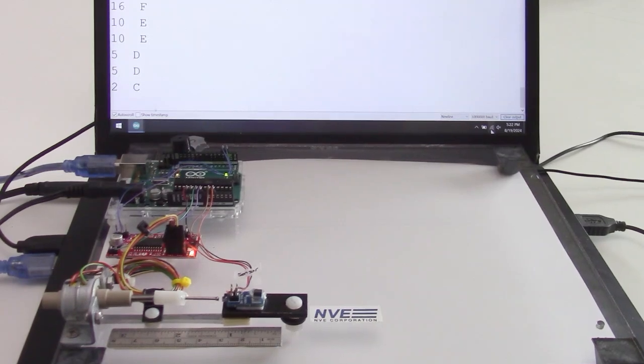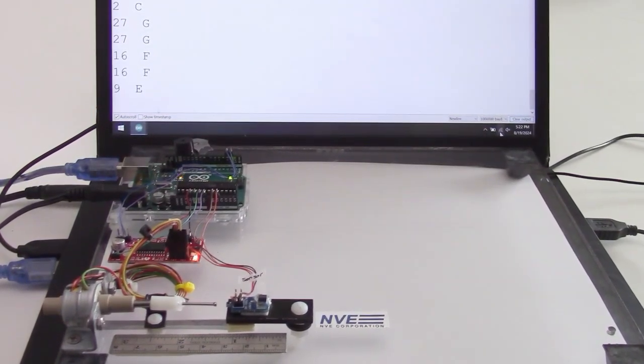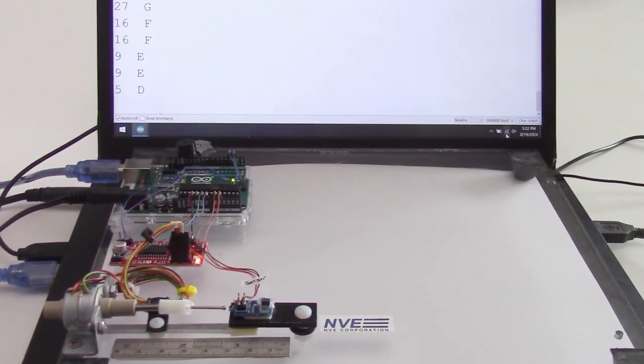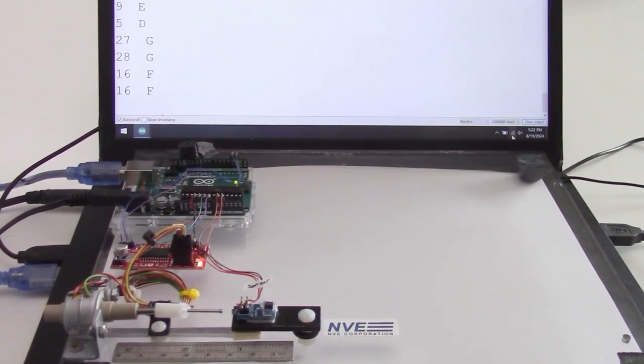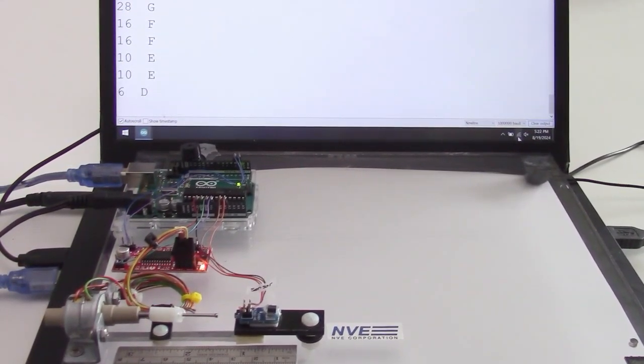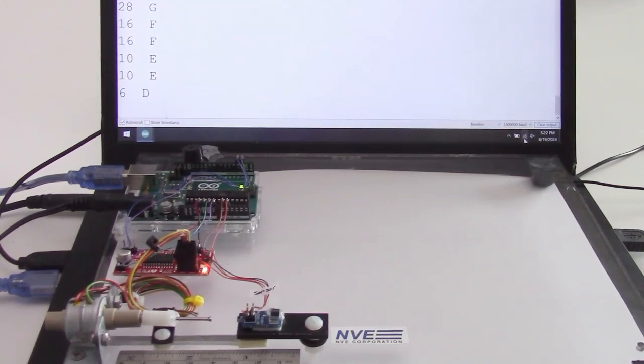So we have a linear stepper motor to position the nail. A computer records the field and the note. The sensor has plenty of signal for Arduino analog inputs with no amplification.